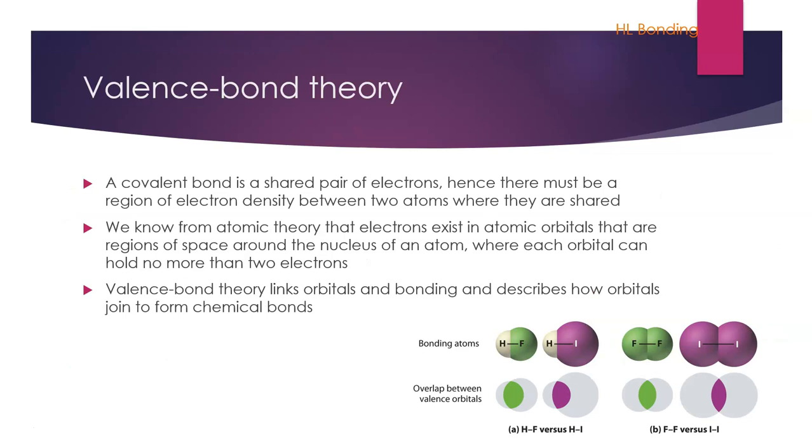The covalent bond we know as a shared pair of electrons, hence there must be a region of electron density between the two atoms that are shared, i.e. that electron cloud needs to overlap somewhere. We know from atomic theory that electrons exist in orbitals and that they are just regions of space around the nucleus of the atom, where each orbital can hold no more than two electrons.